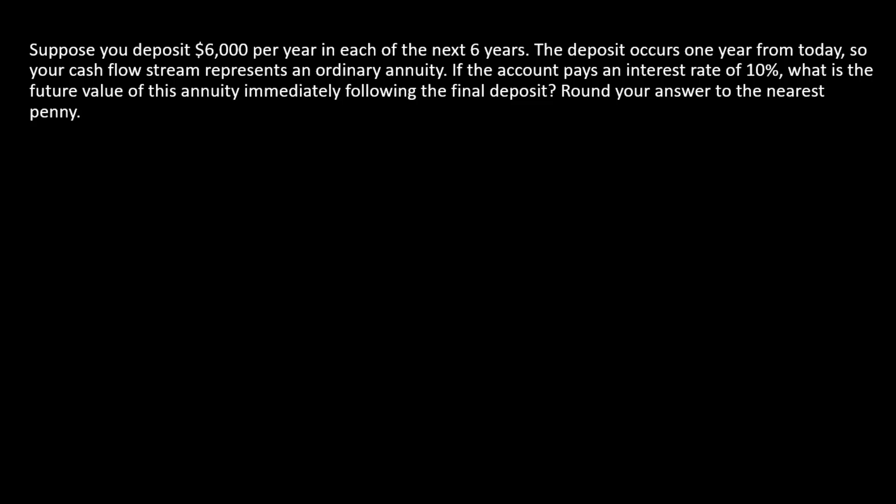We have an annuity with a payment of $6,000 that occurs in each of the next six years. The first deposit occurs one year from today, so everything's going to work in an ordinary fashion. Here's what the timeline looks like.